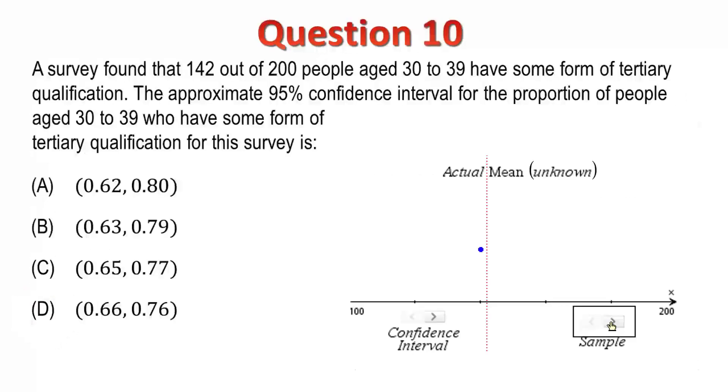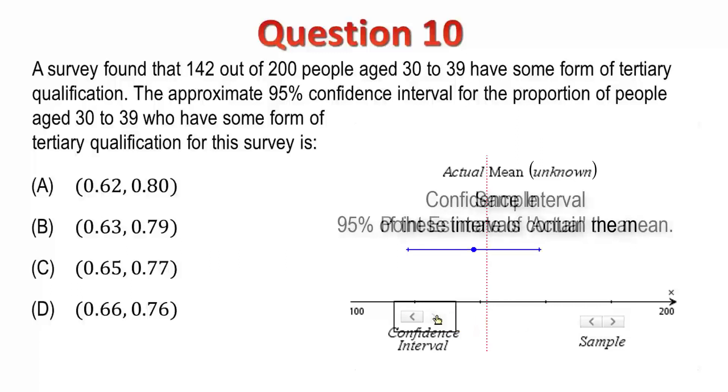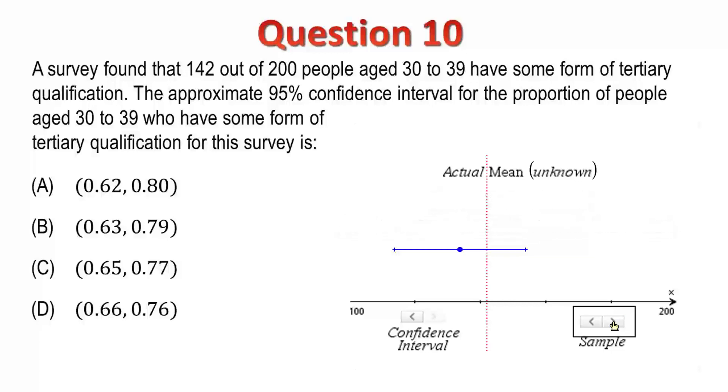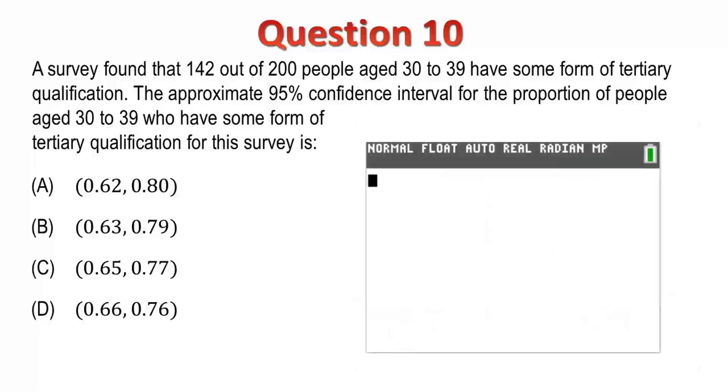Question 10. A survey found that 142 people out of 200 aged between 30 and 39 have some form of tertiary qualification. We are required to determine a 95% confidence interval for the actual proportion of the population in the same age group that have a tertiary qualification. To answer this question, we need to understand that our sample represents a point estimate of the true proportion, and that these point estimates are approximately normally distributed around the true mean, assuming the necessary conditions regarding sampling have been met. In other words, our sample may be a good or poor estimate of the actual mean. We just don't know. But, we can determine an interval over which we will be 95% confident that the true population mean or proportion lies.